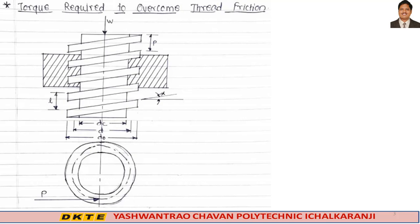We have a square screw thread. It has a mean diameter D. L is the lead per one rotation, alpha is the helix angle, and P is the pitch. This is the effort P applied at that point to give a torque to overcome the thread friction.